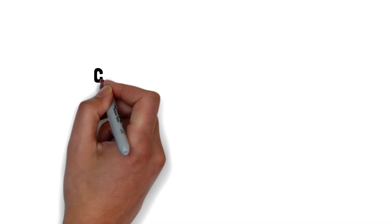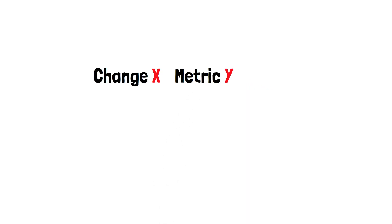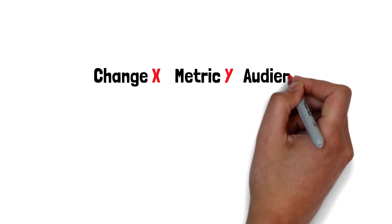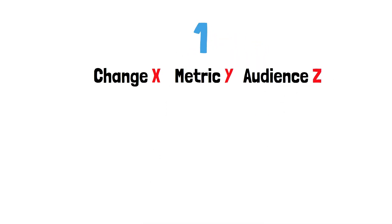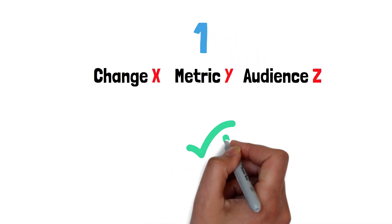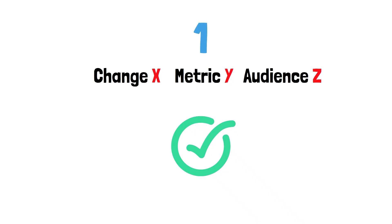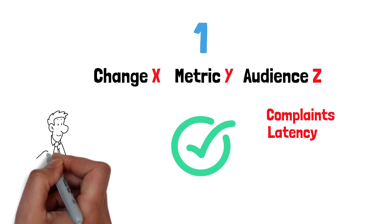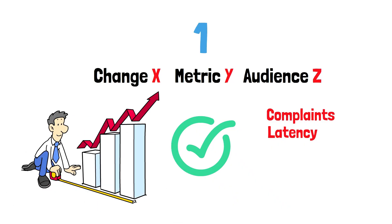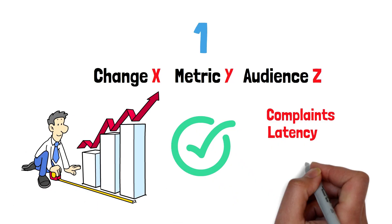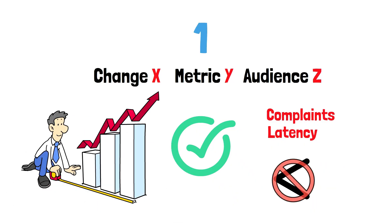Write a crisp hypothesis: change X will increase metric Y for audience Z. Choose one primary metric. Add guardrails for quality, complaints, and latency, so you don't win by breaking the experience. Define the minimum improvement worth shipping — tiny lifts that don't pay back effort aren't wins.